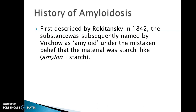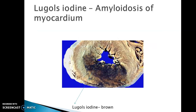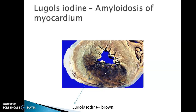A little bit about the history. First described by Rokitansky in 1842, the substance was subsequently named by Virchow as Amyloid under the mistaken belief that the material was starch-like. Amylon means starch. Similar to starch, this material when present stains brown by Lugol's iodine. Therefore, this material was called Amyloid, meaning 'like starch'.